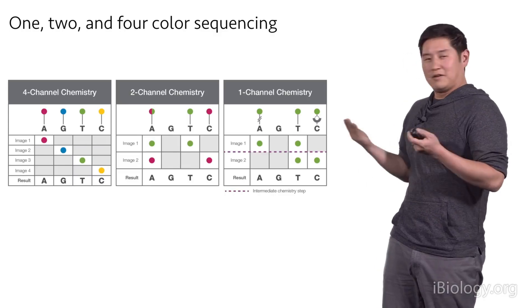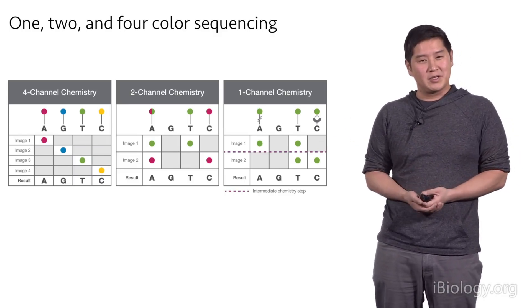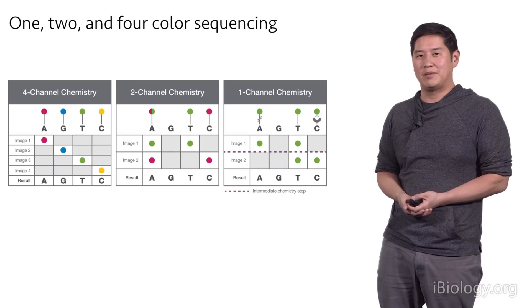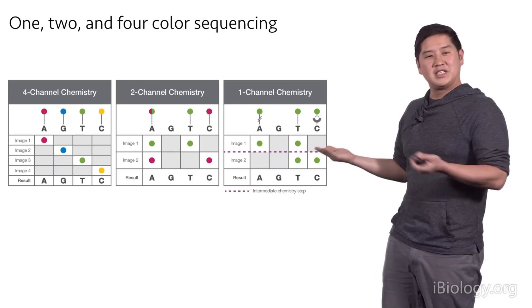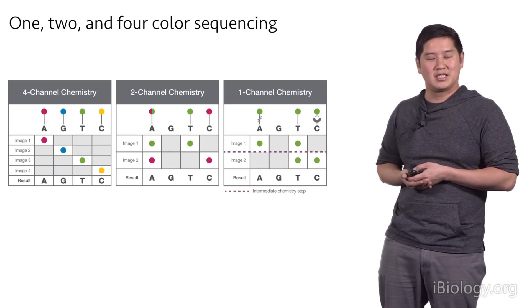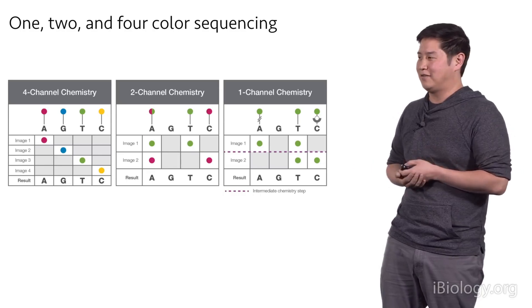So these are the different flavors of Illumina sequencing. We started off with four color chemistry, moved to two color chemistry, and now we have one color chemistry. All these chemistries are still used currently on existing platforms and each of them have their benefits.